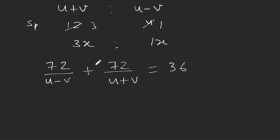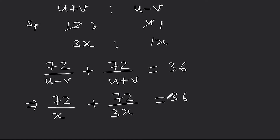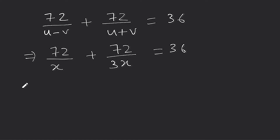अब आगे क्या करना है — 72 के साथ u-b लेते हैं जो कि 1x है, मतलब x। और 72 के साथ u+b जो कि 3x है। इन दोनों को मिलाकर कितने के बराबर आ रहा है — 36 के बराबर। तो equation बनती है: 72/x + 72/3x = 36।